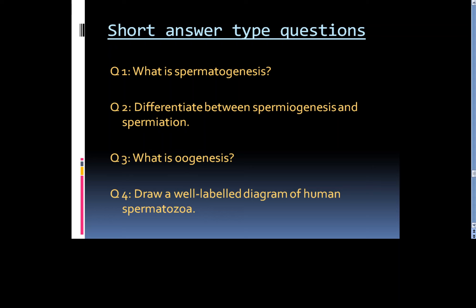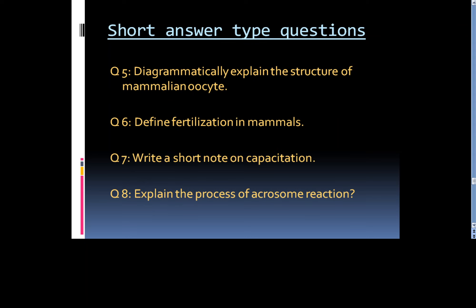The next category of questions is short answer type questions. Question 1: What is spermatogenesis? Question 2: Differentiate between spermiogenesis and spermiation. Question 3: What is oogenesis? Question 4: Draw a well-labeled diagram of human spermatozoa. Question 5: Diagrammatically explain the structure of mammalian oocyte. Question 6: Define fertilization in mammals. Question 7: Write a short note on capacitation. Question 8: Explain the process of acrosome reaction.